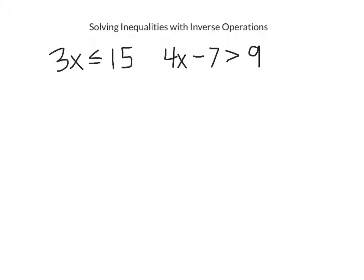I notice that this variable is being multiplied by 3. So to undo that, we divide by 3. Whatever I do to one side, I've got to do to the other side as well. So x is less than or equal to 5.